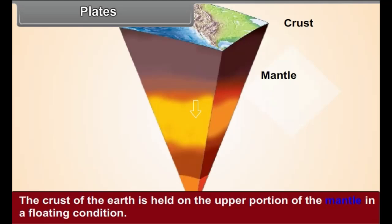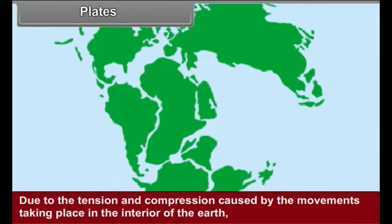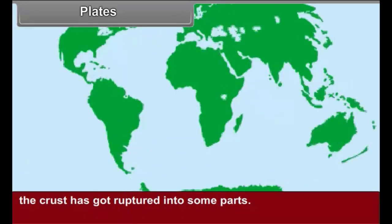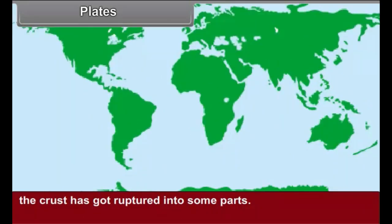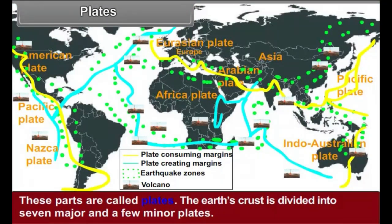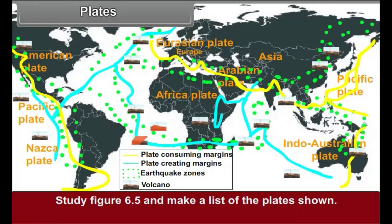Plates. The crust of the Earth is held on the upper portion of the mantle in a floating condition. Due to the tension and compression caused by the movements taking place in the interior of the Earth, the crust has got ruptured into some parts. These parts are called plates. The Earth's crust is divided into seven major and a few minor plates. Study figure 6.5 and make a list of the plates shown.